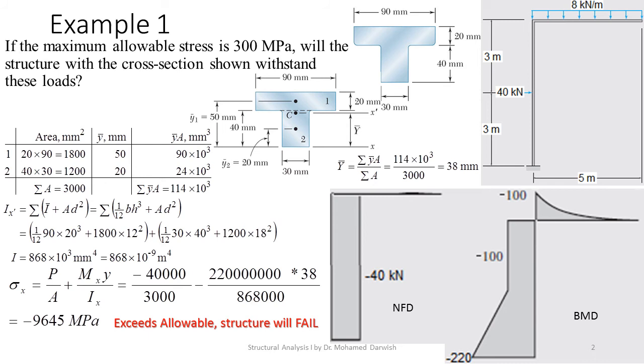I will simply apply my equation: σₓ = P/A + Mₓy/Iₓ. So now I will have negative 40,000 over 3000 minus 220 million times 38 over 868,000. This will give us a compression stress of 9,645 megapascals, which is significantly much larger than the maximum allowable stress. That means the structure will fail.